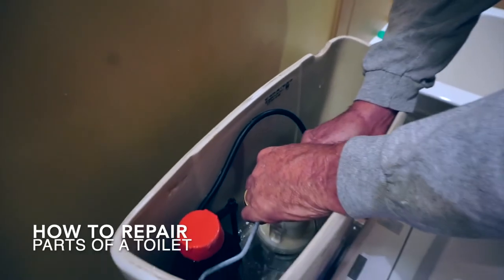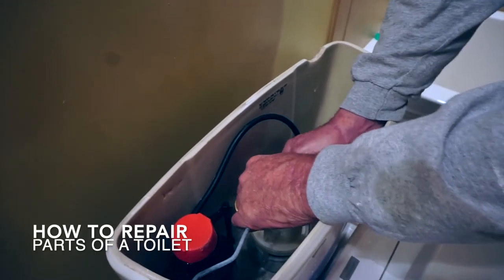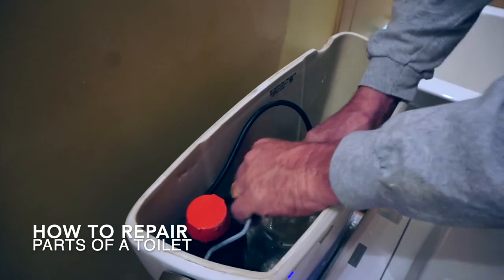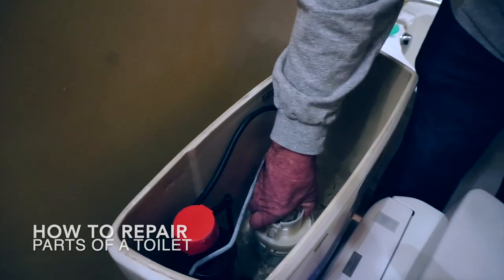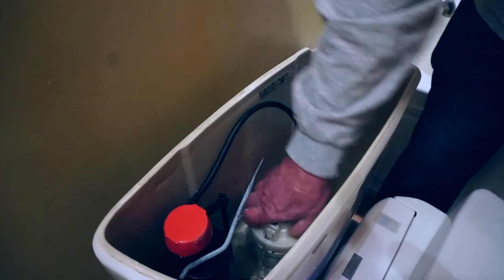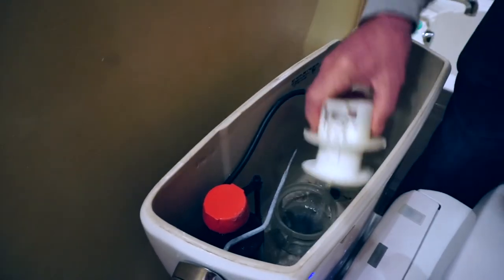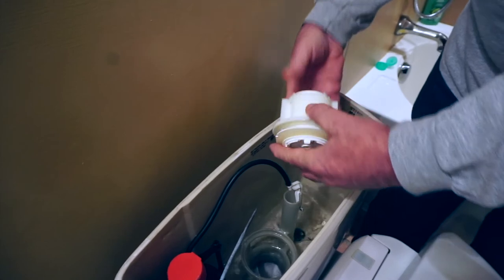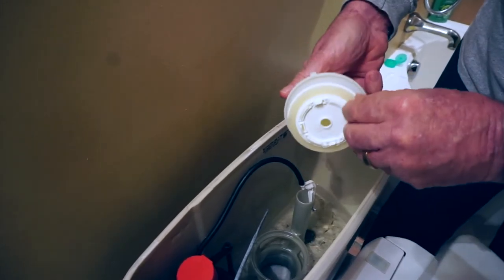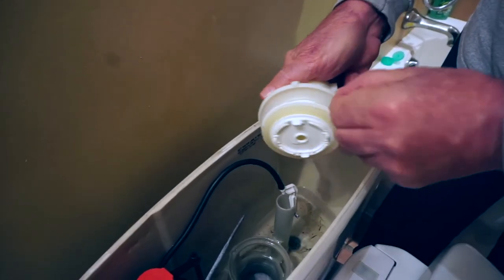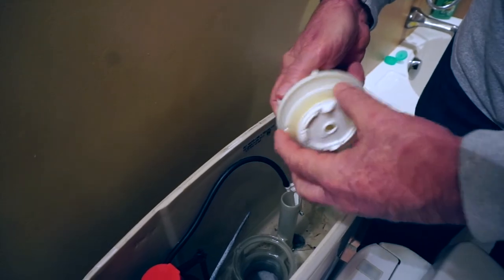So if you want an idea what the part looks like on these Totos and how easy they are to repair, you just come in and this is going to turn. You just turn it out of here and pull it out. So this is it. See when I talk about a gasket, see a rubber gasket right there? That can be pulled off and another one slid right on.